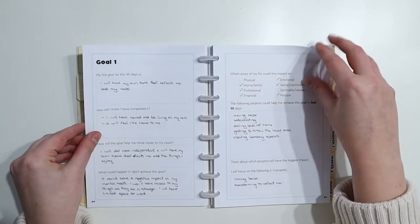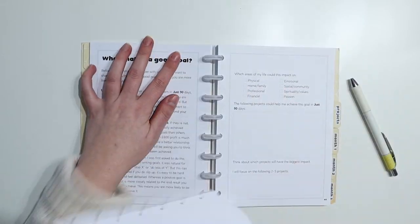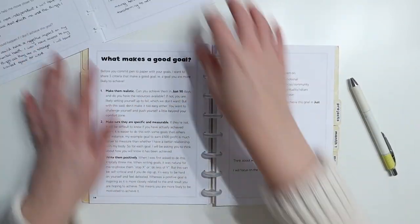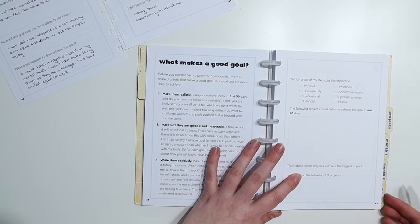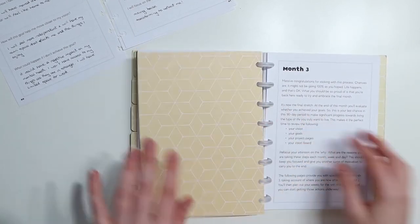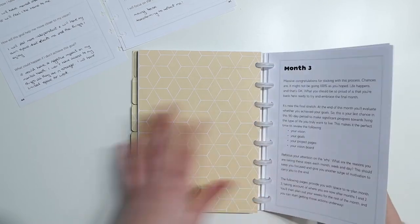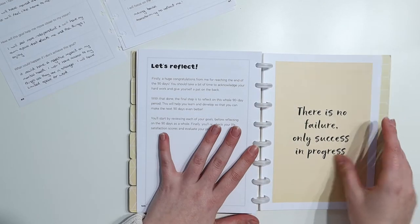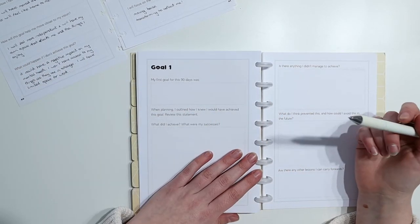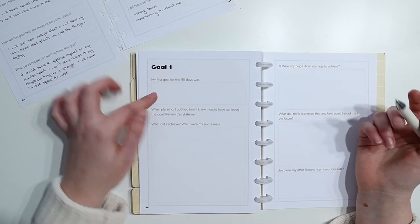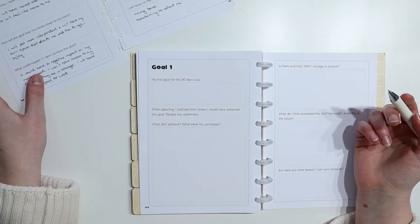So here we have goal one and goal two and I'm going to slip those off the discs and I'm going to just put them to the side here so that I can compare. So if we go back to month three, I'm really excited to be doing this, even though I know I haven't done everything. But that's just how life goes. I'm not being hard on myself about it. The questions on this page are, my goal for this 90 days was, so you put your goal up here. When planning, I outlined how I knew I would have achieved this goal. So that we put here.